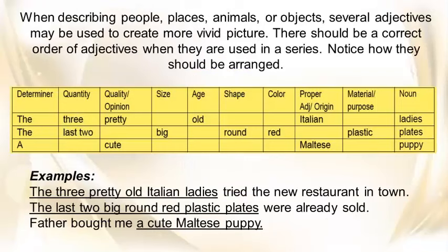When describing people, places, animals, or objects, several adjectives may be used to create a more vivid picture. There should be a correct order of adjectives when they are used in a series. Notice how they should be arranged. Examples: 'The three pretty old Italian ladies tried the new restaurant in town.' 'The last two big round red plastic plates were already sold.' 'Father bought me a cute Maltese puppy.'